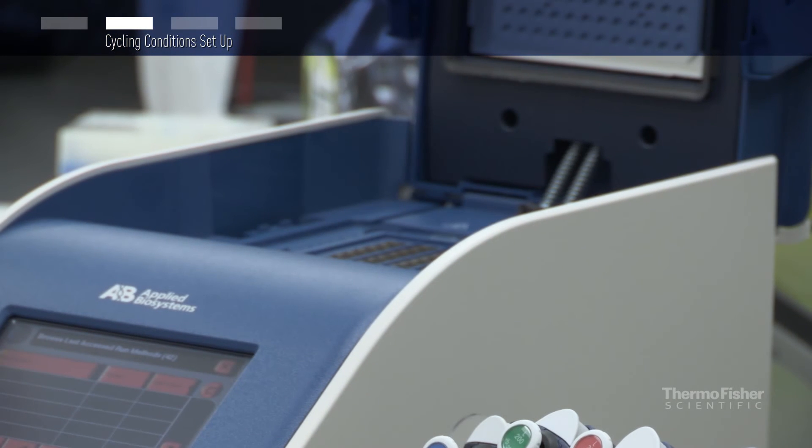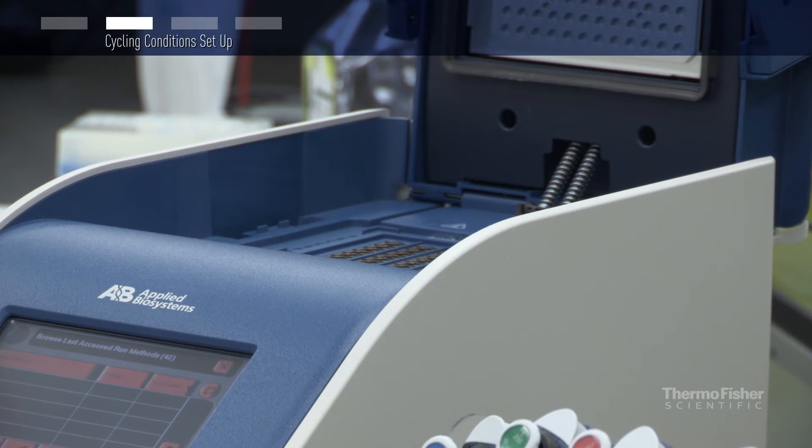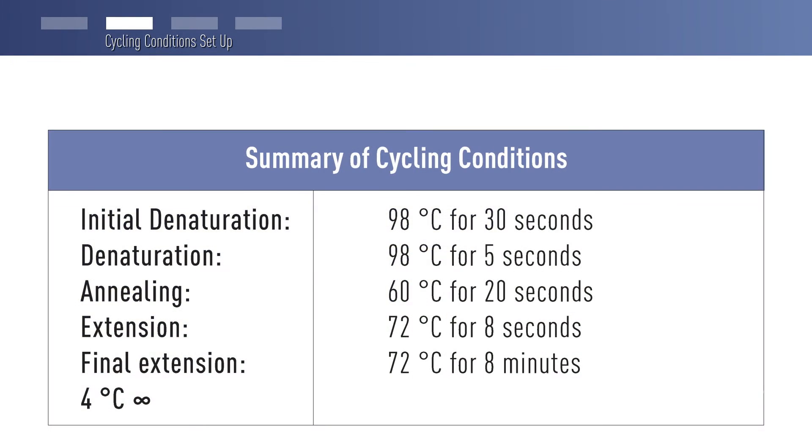For our example, we will amplify a 500 base pair product from plasmid DNA and we'll use 8 seconds for extension. Here is a summary of the cycling conditions.